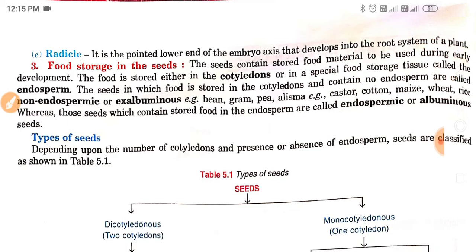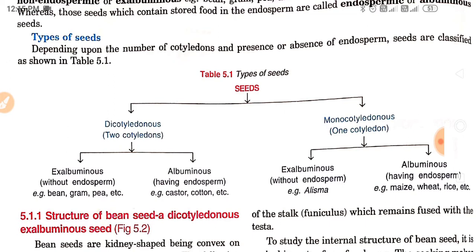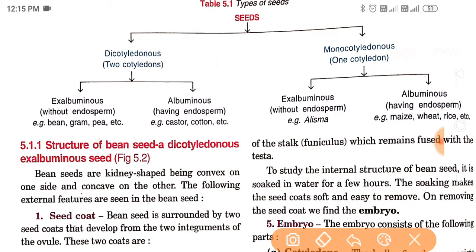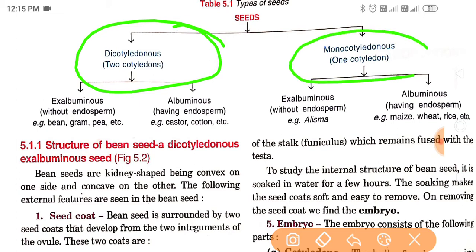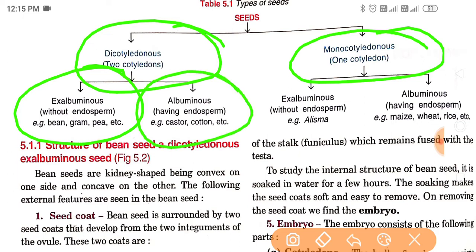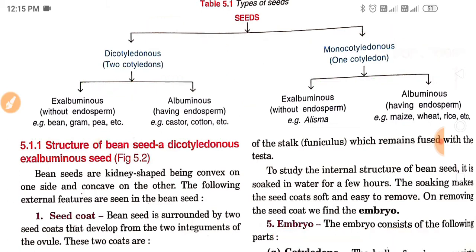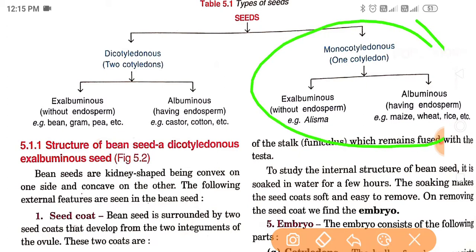Depending upon the number of cotyledons and presence or absence of endosperm, seeds are classified into two types: dicotyledonous and monocotyledonous. In dicotyledonous seeds: ex-albuminous (without endosperm) — bean, gram, pea; and albuminous (with endosperm) — castor, cotton. In monocotyledonous seeds: without endosperm — Alisma; and albuminous (with endosperm) — maize, wheat, rice.